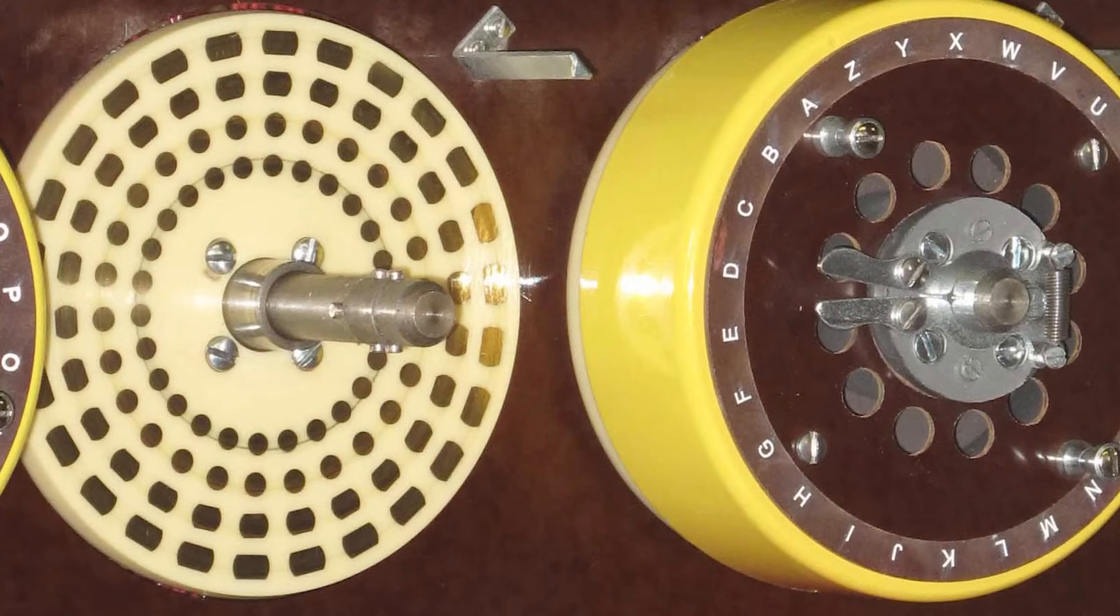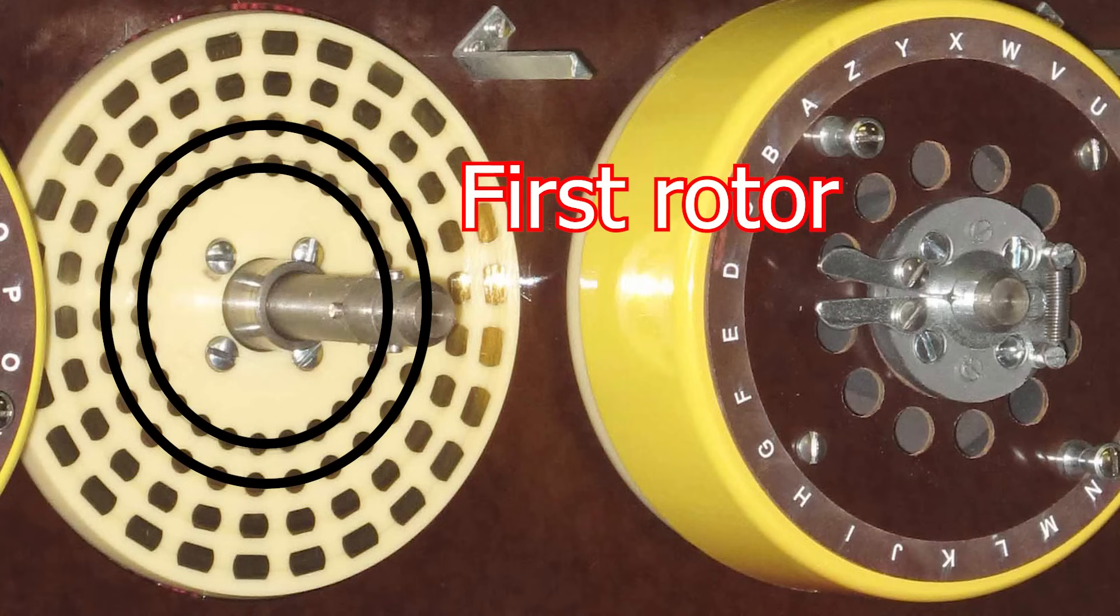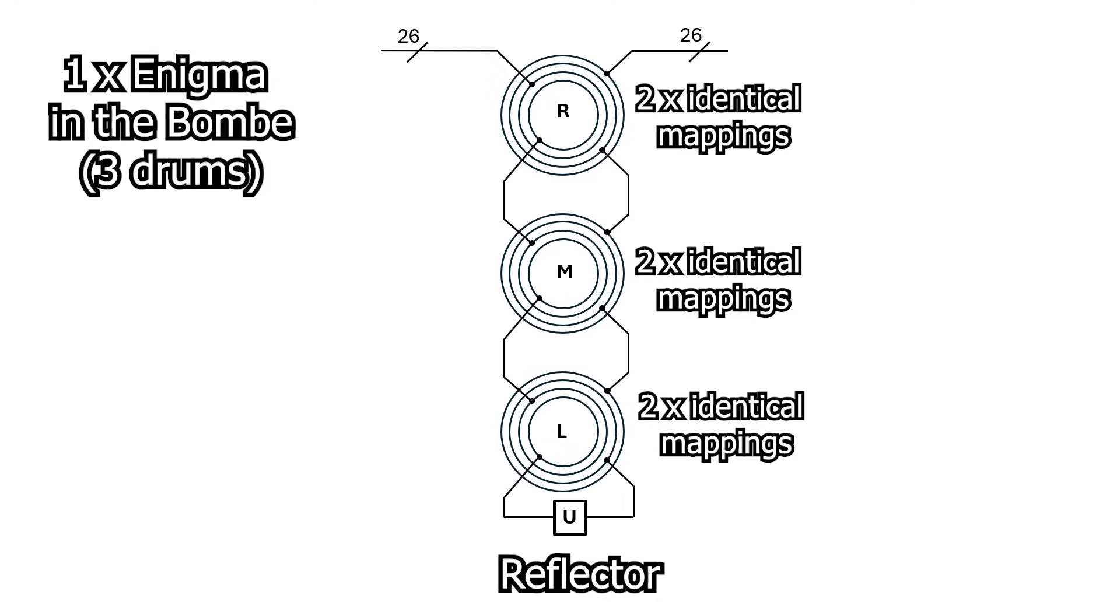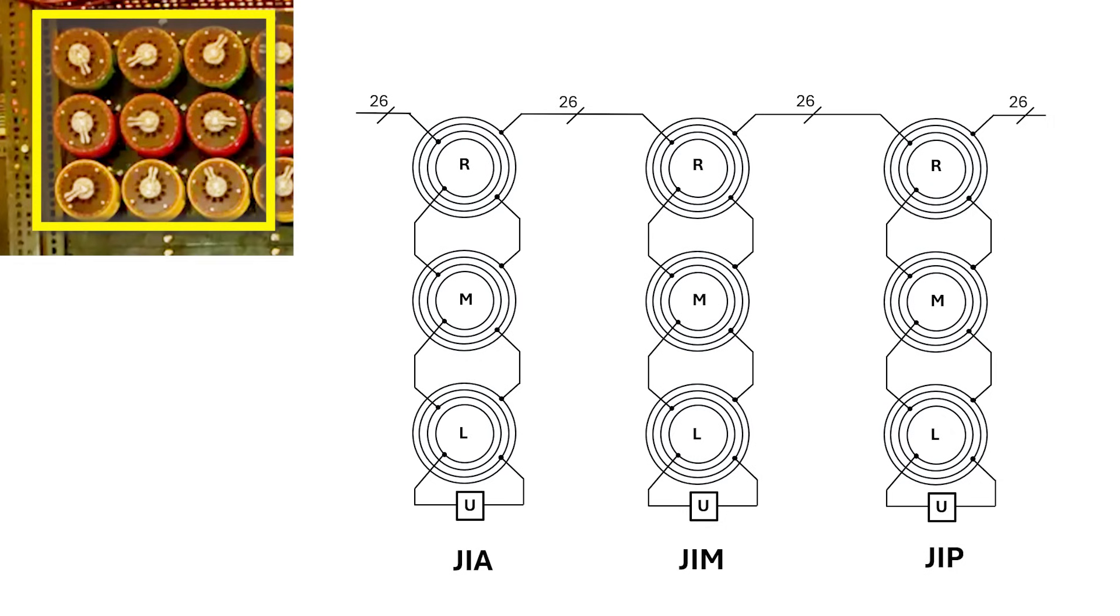The inner set of contacts represents one rotor, and the outer set of contacts represents an identical copy of the same rotor. Because they're on the same drum, with the same axial rotation, this pair of rotors would always move in lockstep. This was essential, to allow the output of one set of rotors, to be connected to the input of another set of rotors.